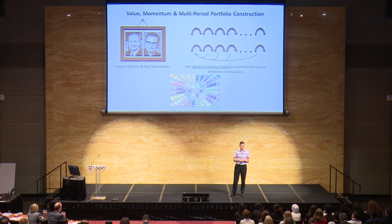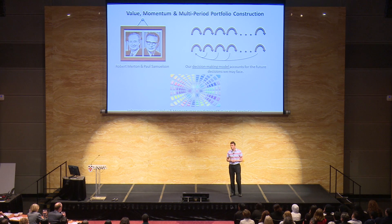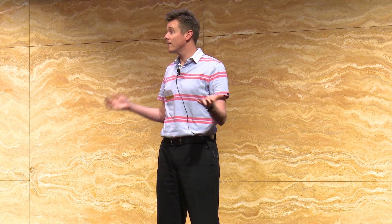This all started to change in 1969, when my pin-up heroes — Nobel laureates Robert Merton and Paul Samuelson — developed what's known as a multi-period portfolio construction framework. This framework is quite similar, except that in making our present decision, we account for current information, and we also consider the future situations that we may face and the future decisions that we may make.